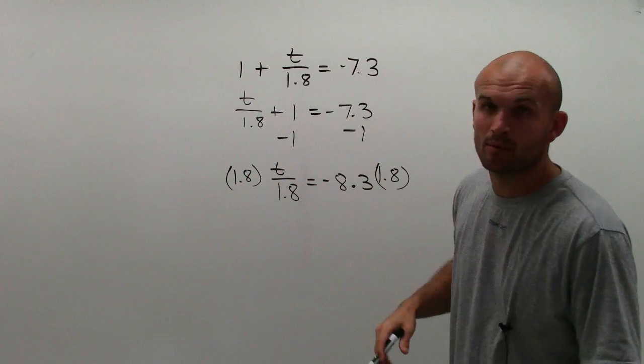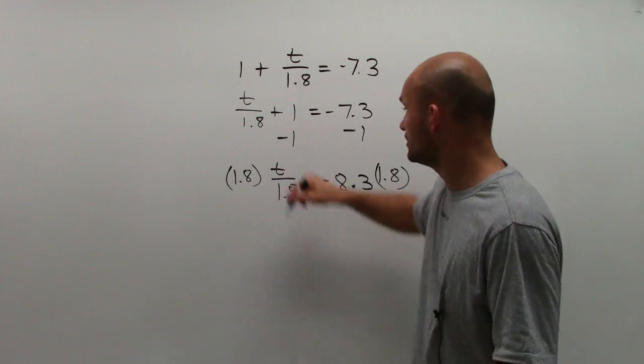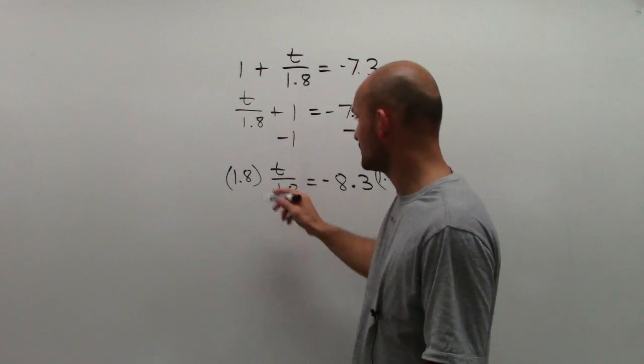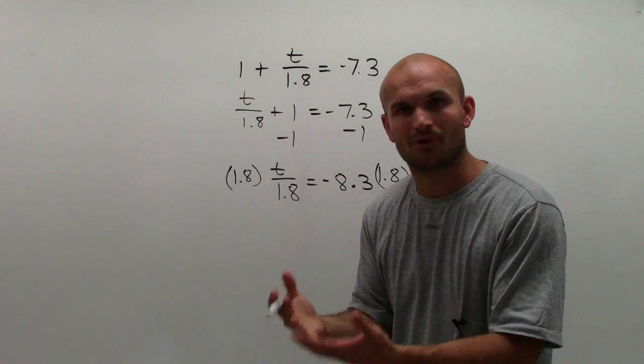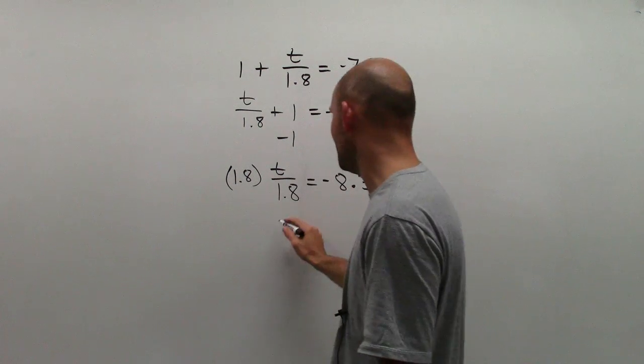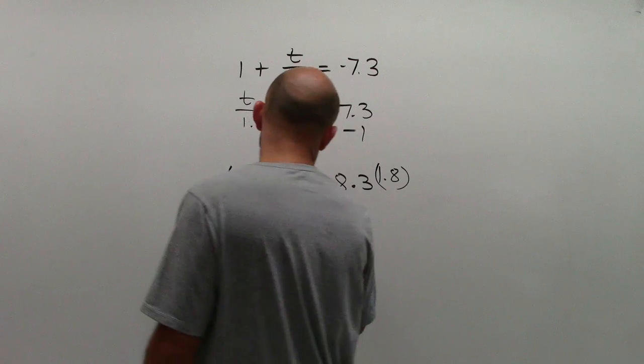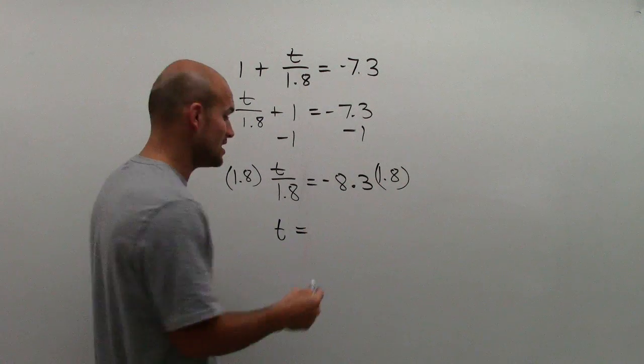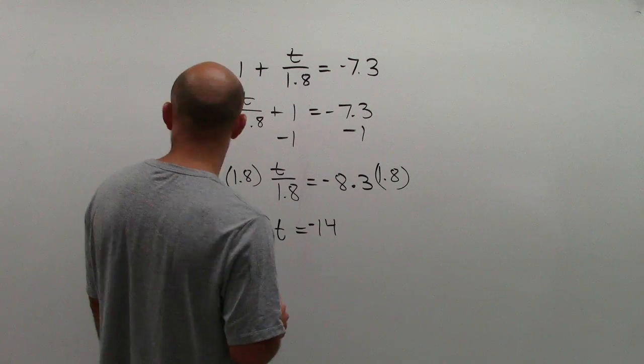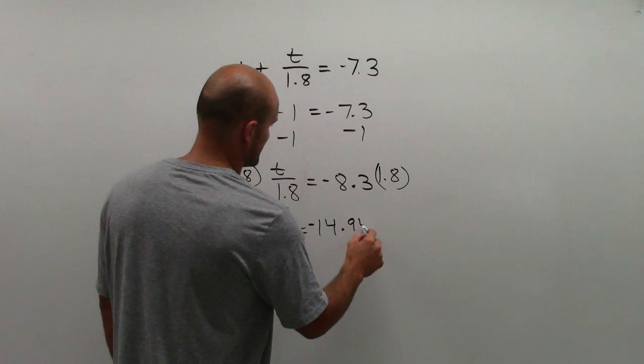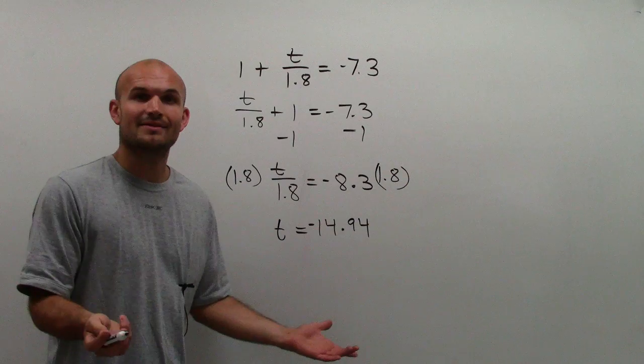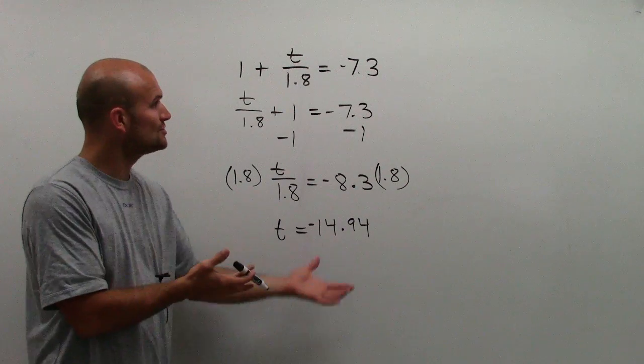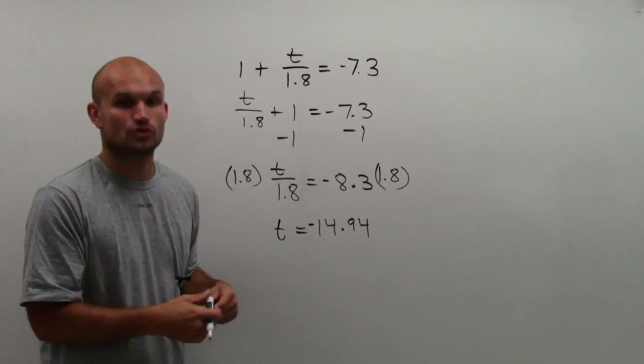Well, 1.8 divided by 1.8 goes to 1. So that's going to go to 1 - 1 times t is t. And then that equals negative 8.3 times 1.8, which you should do in your calculator, which is going to be negative 14.94. And there you go. That's the solution that makes this equation true.